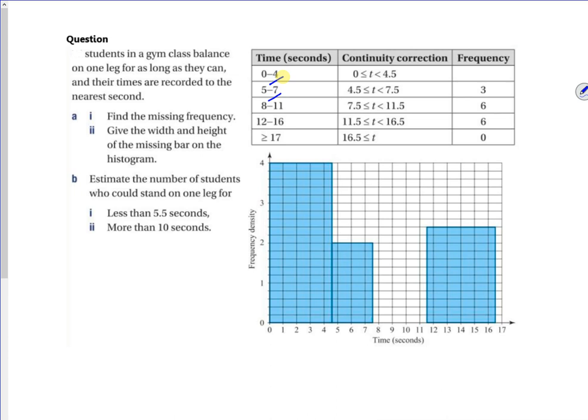So it says, find the missing frequency. Right, so potentially we're thinking, it's 4 and a half wide, and it's 4 tall. So initially we're thinking, so we've got 4 and a half wide by 4 tall, which is 18. That's if there's no scaling. So if there's no scaling, then I'm okay.